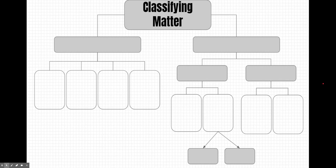Let's get started filling it out. So we're going to try to classify matter and one way to classify matter is based on its composition or what it's made out of. Depending on what it's made out of, we can further classify matter as either a pure substance or a mixture.